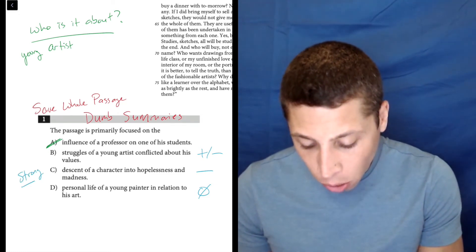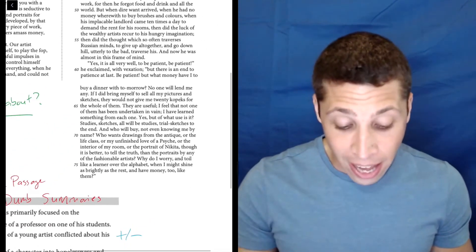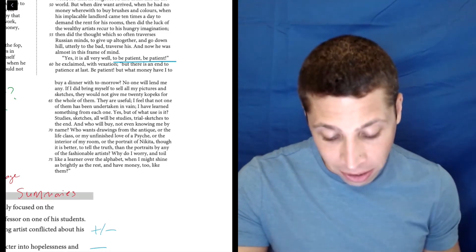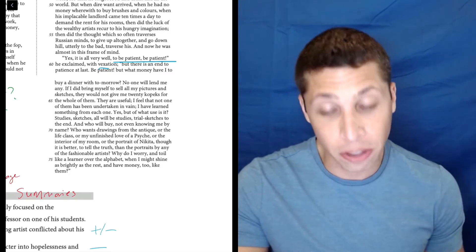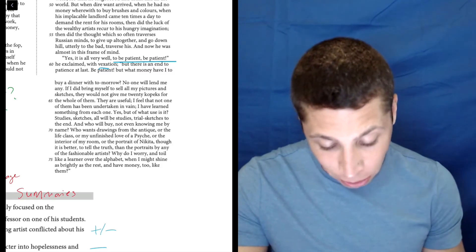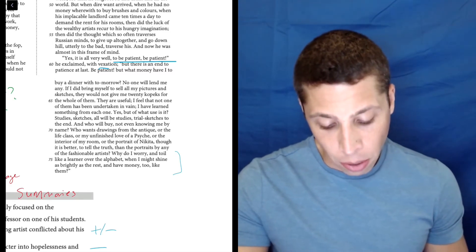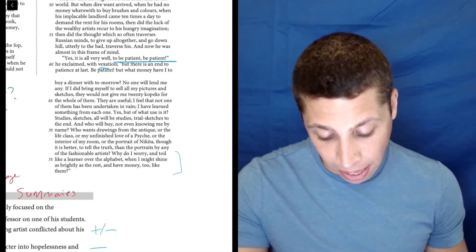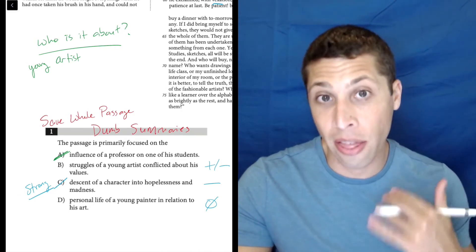Madness? That's going insane. Is this character going insane? Absolutely not. At the end, he's definitely unhappy. He's vexed, he's frustrated, but 'there's an end to patience at last... what money have I to buy a dinner with tomorrow?' So he's broke and complains a little bit. But let's look at the end here: 'Why do I worry and toil like a learner over the alphabet when I might shine as brightly as the rest and have money too, like them?' Does that sound like an insane person, a mad person? No. He's also not hopeless, he's just frustrated. So this is a very strong choice and the dumb summary of our passage is definitely not this negative. We can get rid of it.